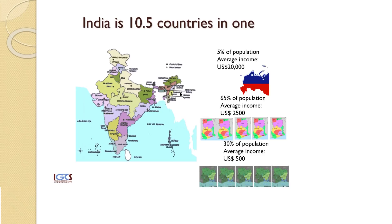If you divide the country into different income fractions, about 5 percent of the population — constituting roughly half the population of Russia — has the same average income as Russia. About 65 percent of the population has an average income of about US dollars 2,500 per year in purchasing parity terms, the same as five Ghanaian populations with the same average income as Ghana. And the poorest 30 percent of India have an average income about the same as Ivory Coast — amounting to about five such populations of Ivory Coast.